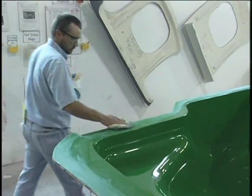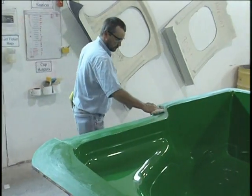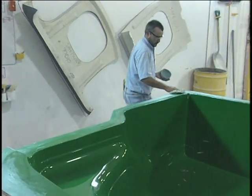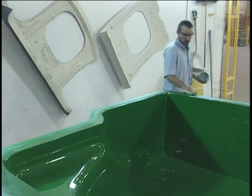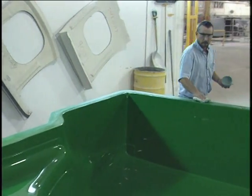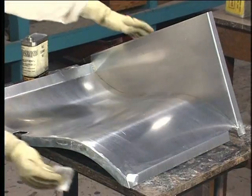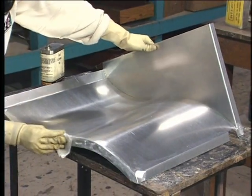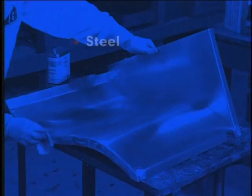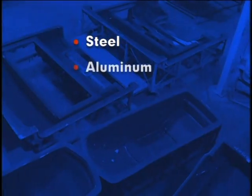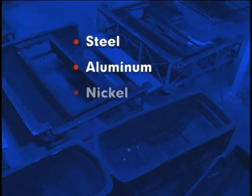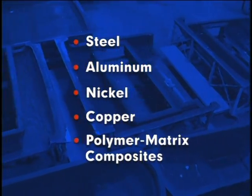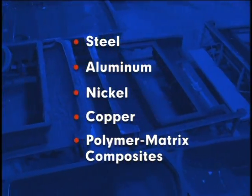A mold having the desired part shape is then coated with a release agent to permit subsequent part release. Composite manufacturing molds are commonly made of steel, aluminum, nickel, copper, or polymer matrix composites.